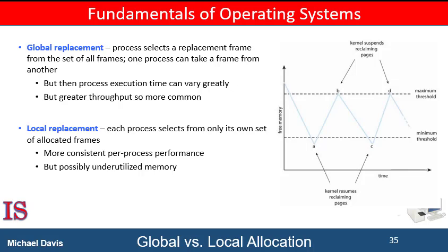Over time, there are additional requests for memory, and at point C, the amount of free memory again falls below the minimum threshold. Page reclamation resumes, only to be suspended when the amount of free memory reaches the maximum threshold at point D. The process continues as long as the system is running. The kernel routine may adopt any page replacement algorithm, but typically uses some form of least recently used approximation.